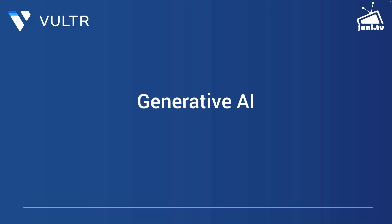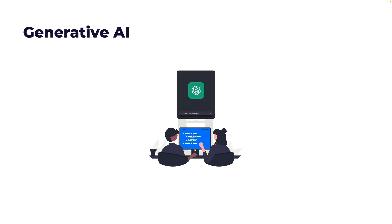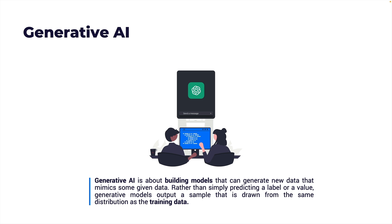Now let's take a look at Generative AI. Deep learning and neural networks serve as the foundations for Generative AI, and some recent advances in deep learning research have resulted in the rise of Generative AI. Generative AI is about building models that can generate new data that mimics some given data. Rather than simply predicting a label or a value, generative models output a sample drawn from the same distribution as the training data. ChatGPT is one such example — you input a prompt and get back a very different output, essentially interacting with a Generative AI model behind the scenes.